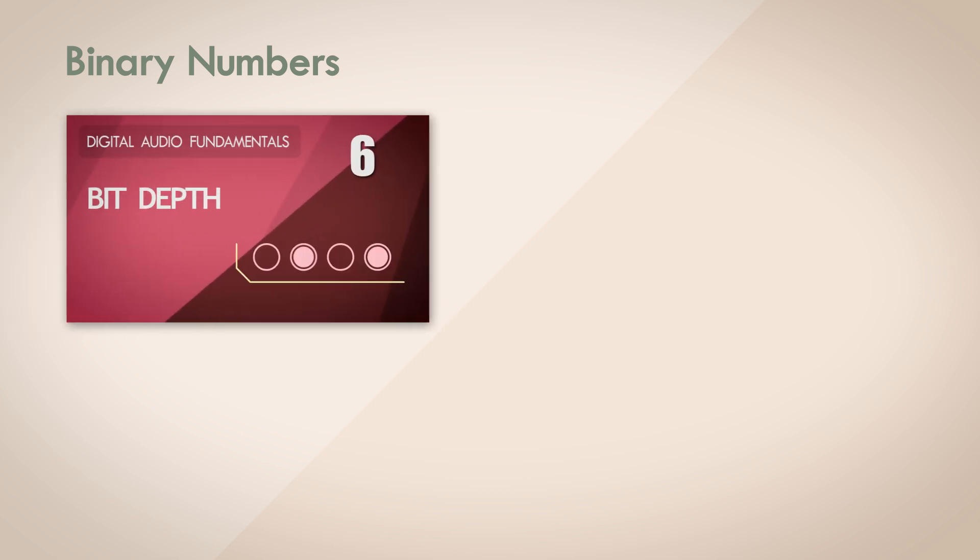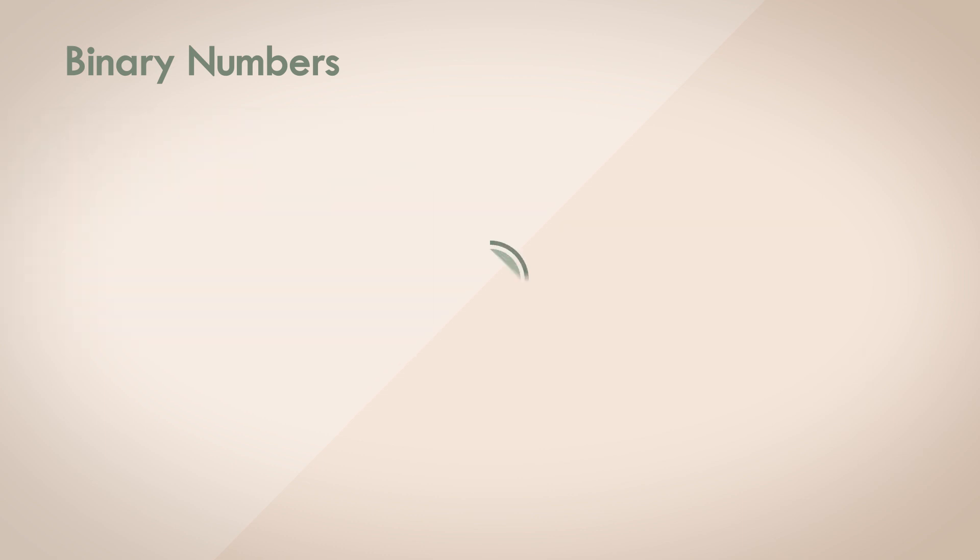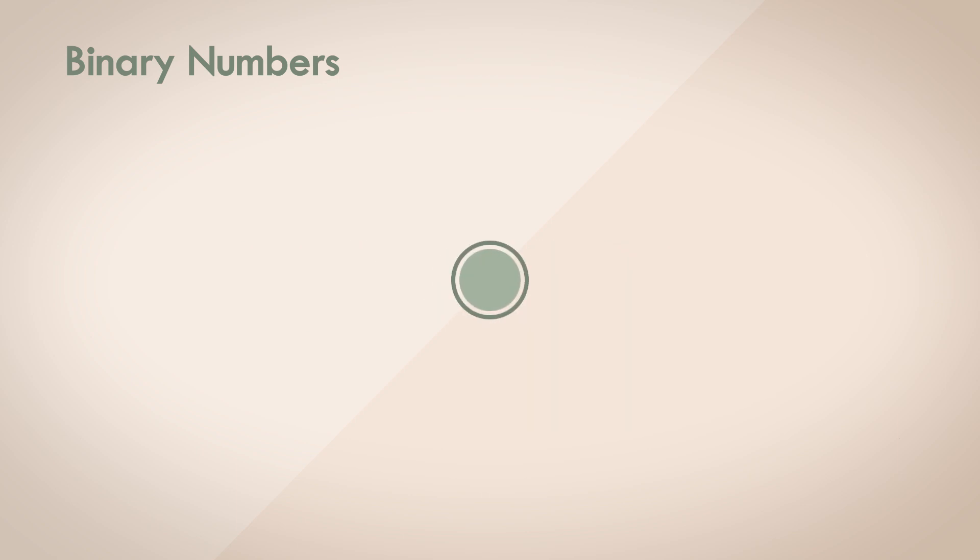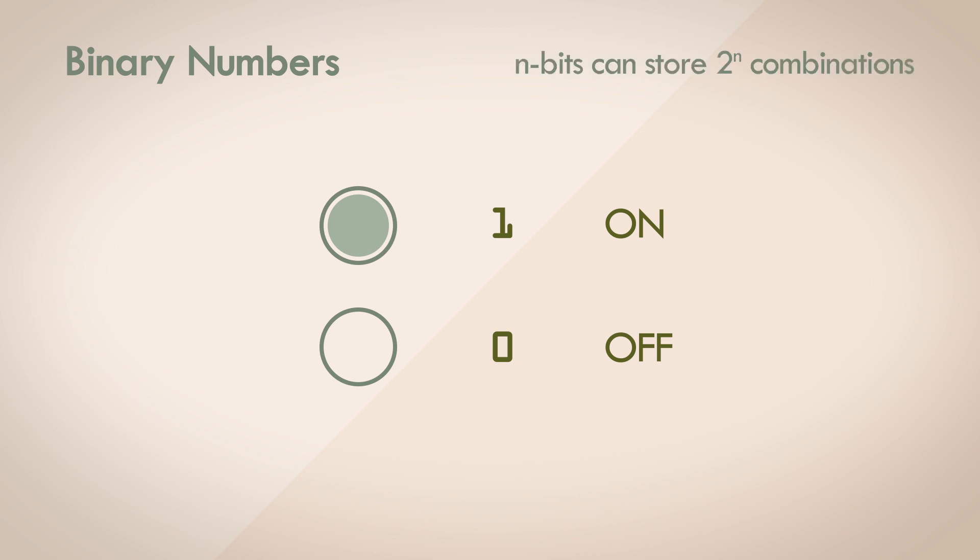Alright, let's get started. I've already talked about binary numbers and binary representation in computers in the video on bit depth. So just to whiz through, digital systems, like computers, represent and store information as a series of binary bits. Each bit has only two possible values, one or zero, on or off. And the number of unique combinations possible with n bits is 2 to the power of n.